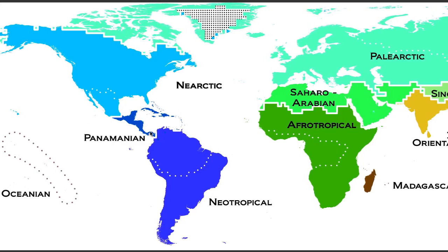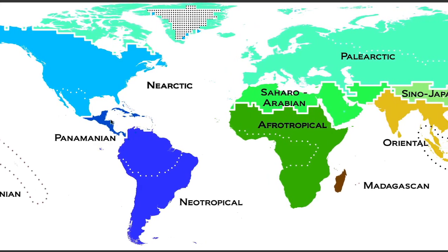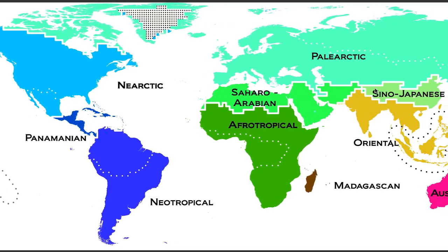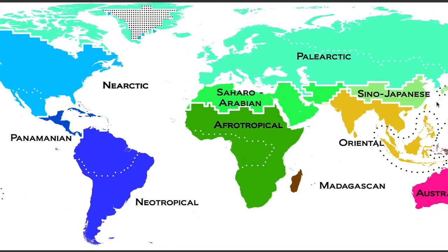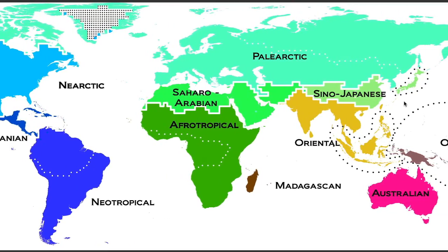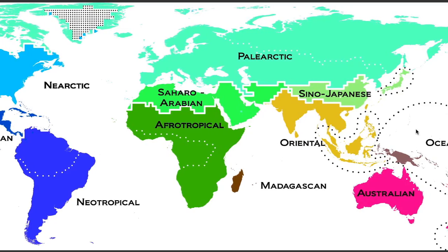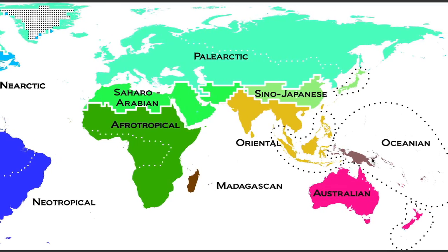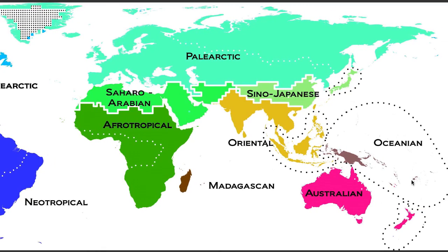Out of our 11 realms, three had never been recognized before. The first one is the Panamanian, here in Central America. The second one is the Sino-Japanese one, which includes most of China and Japan. And the last one is the Oceanian realm, which includes New Guinea and most of the Pacific Islands.